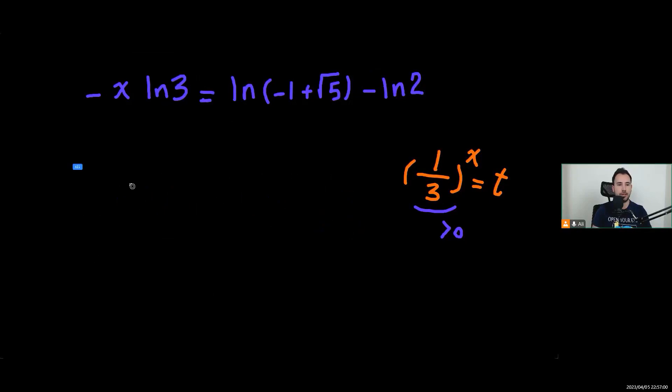To simplify it, finally x would be x equals, dividing both sides by ln 3, it would be ln of negative 1 plus the square root of 5 minus ln 2, all of this divided by ln 3.